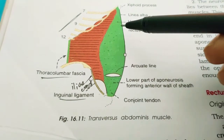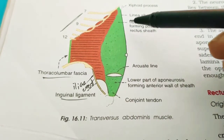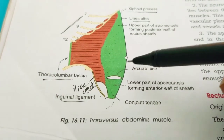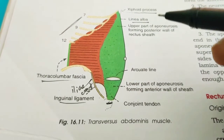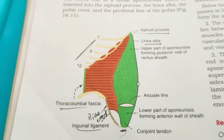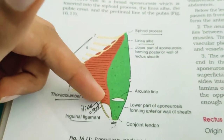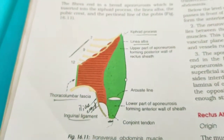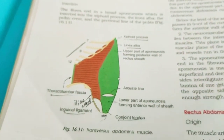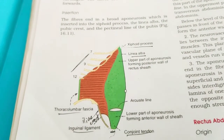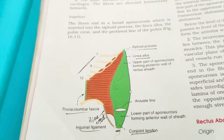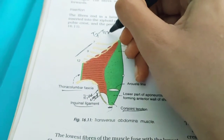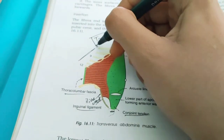This muscle ends in a broad aponeurosis which is inserted into the xiphoid process, the linea alba, and the pubic crest. The lowest fibers of the muscle, together with the lowest fibers of internal oblique, form a conjoint tendon — same as internal oblique. The nerve supply is the lower six thoracic nerves plus the first lumbar nerve (L1), similar to internal oblique.